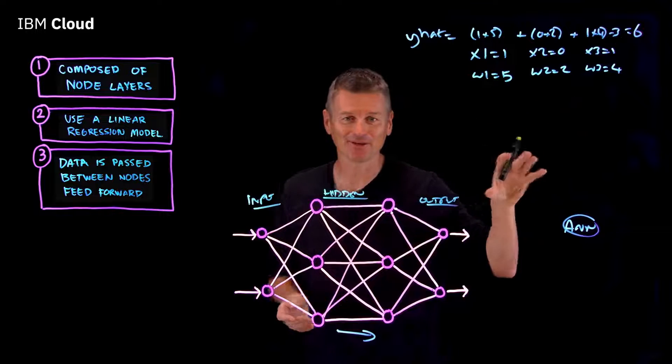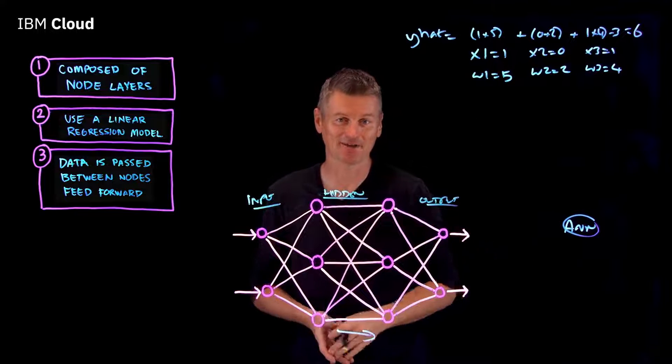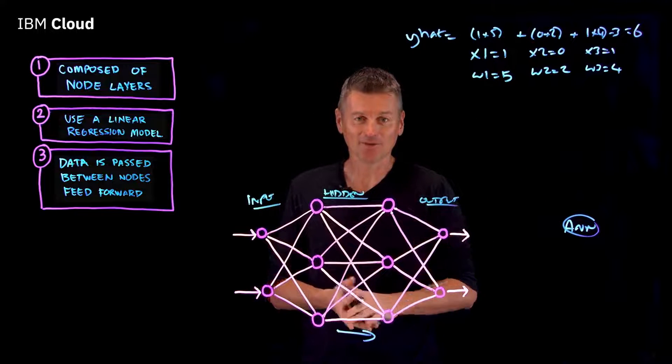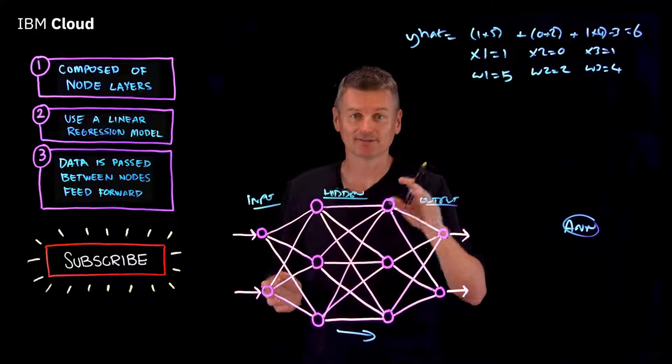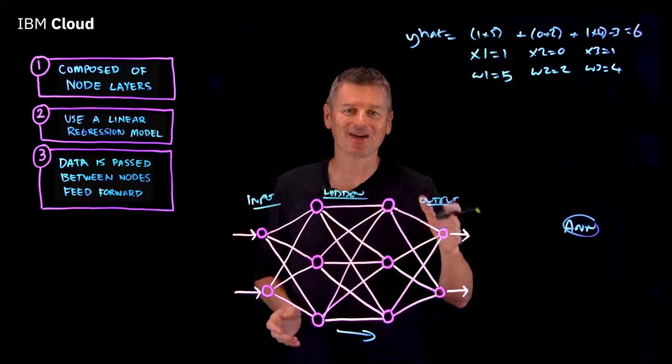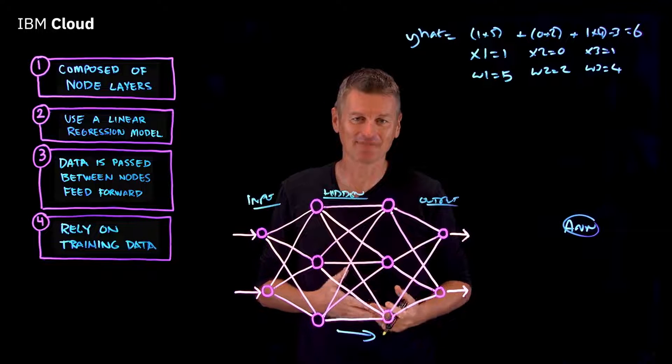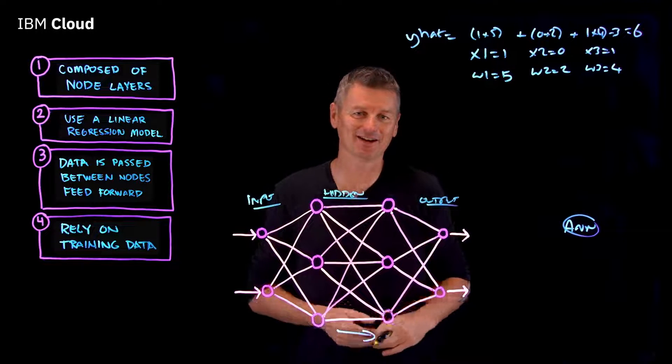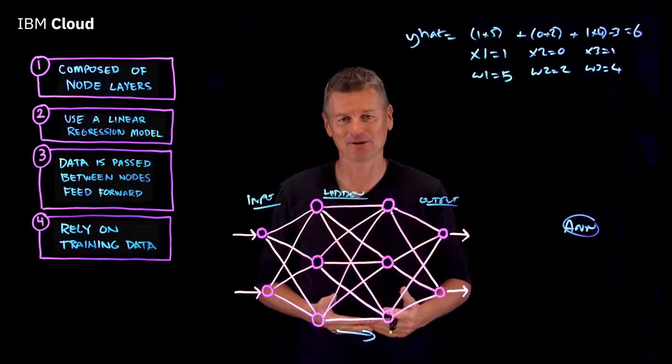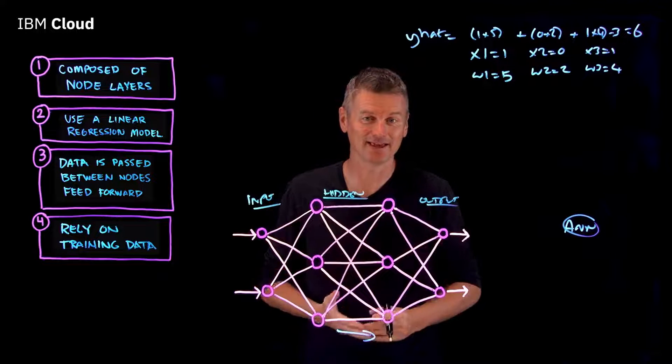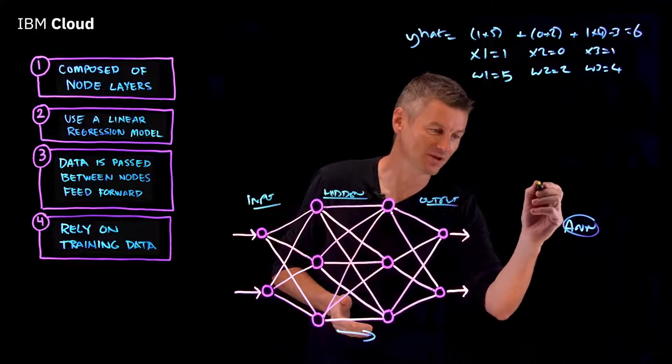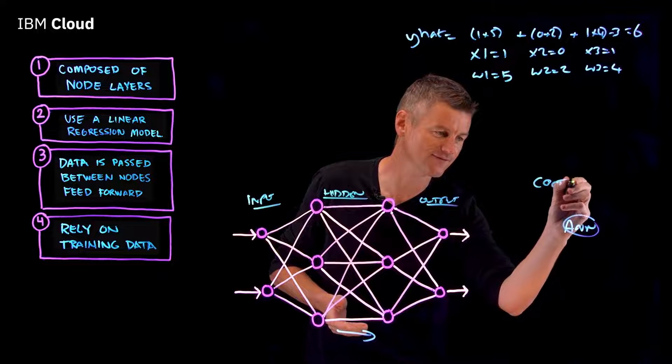And if we adjust the weights or the threshold, we can achieve different outcomes. Number four, neural networks rely on training data to learn and improve their accuracy over time. We leverage supervised learning or labeled data sets to train the algorithm. As we train the model,